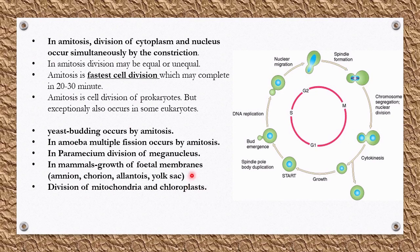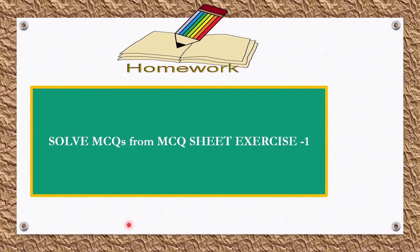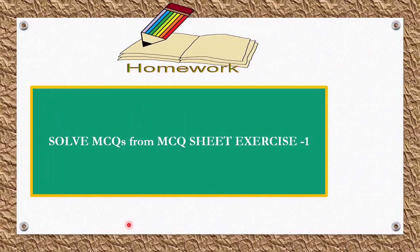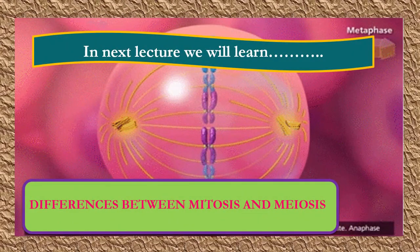Amitosis is the process you can observe in all these examples. This is your homework for today's lecture — solve MCQs from MCQ sheet, exercise number one. In the next lecture we will learn differences between mitosis and meiosis. Goodbye.